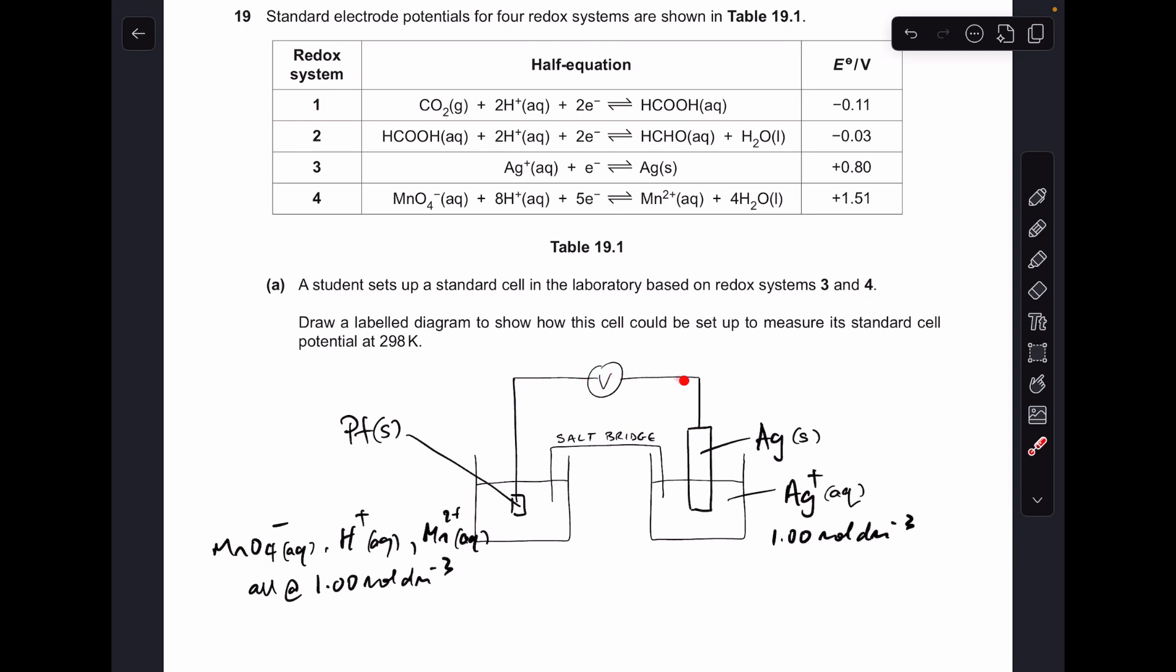We need a platinum electrode in there, and then a wire going through a voltmeter to the silver electrode, dipping into a 1 mole per decimeter cubed solution of Ag+ ions. And there's a salt bridge dipping into the two solutions.